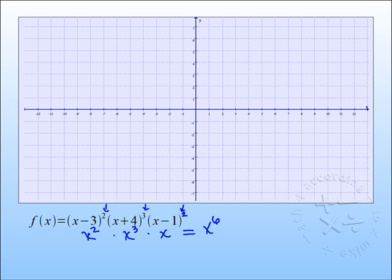Notice the leading coefficient for all these factors inside is 1, and there's nothing over here like a 3 or a 7 to multiply by. So our leading term test says we get y equals x to the sixth.